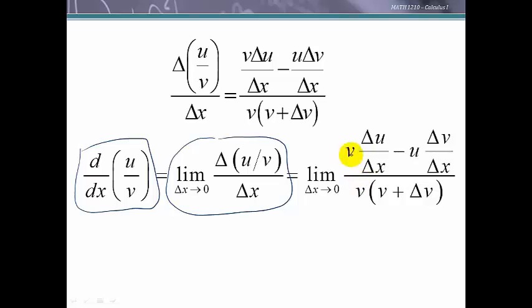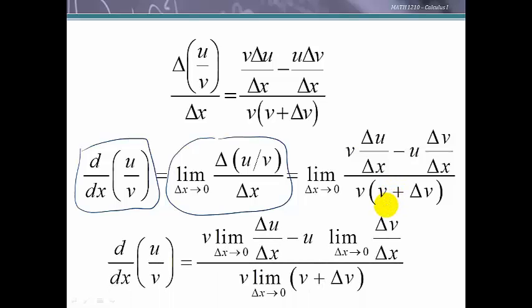As we look at that we know that the limit of a quotient is a quotient of the limits. We also have a product here. The v does not depend on delta v so we could move that out in front of a limit. We have a difference here so we could take the difference of the limits.